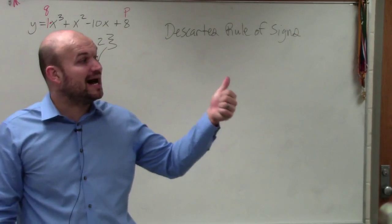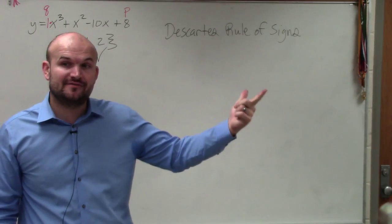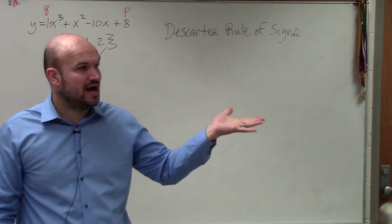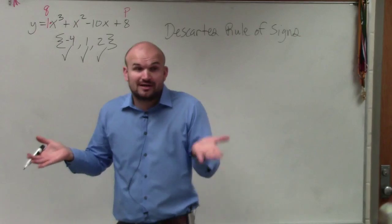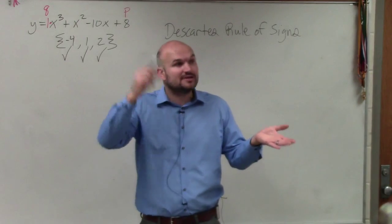So what Descartes' rule of signs tells you is it's going to tell you how many real positive, how many real negative, and how many complex zeros you have. Because remember, we can have zeros that are complex, right?